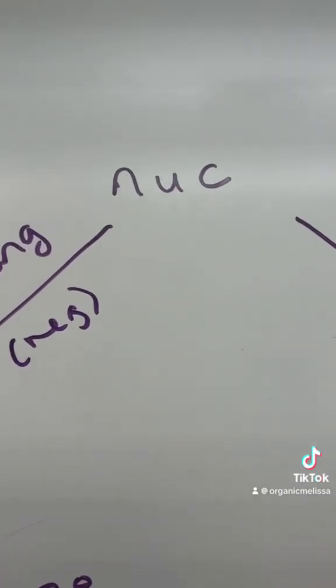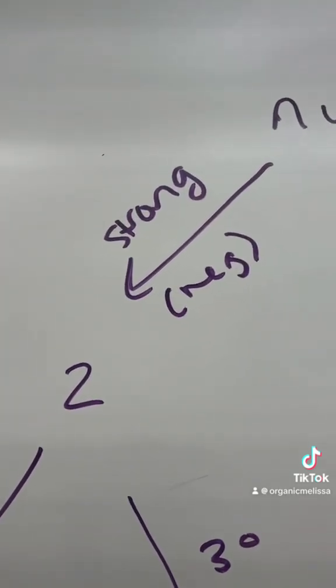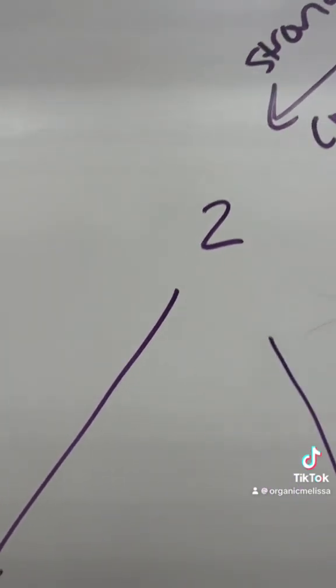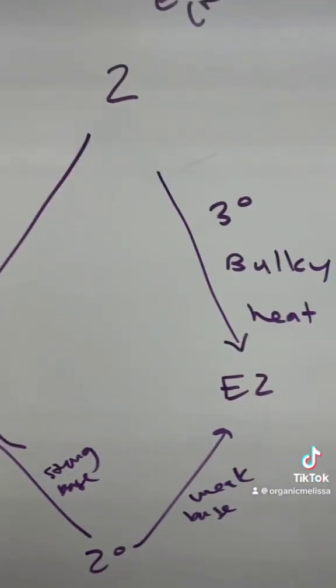First, I look at the nucleophile. If the nucleophile is strong, generally that means it's negative, it's gonna favor twos, so either SN2 or E2.